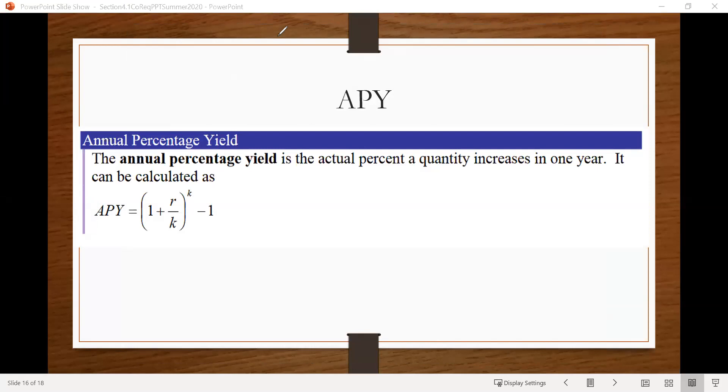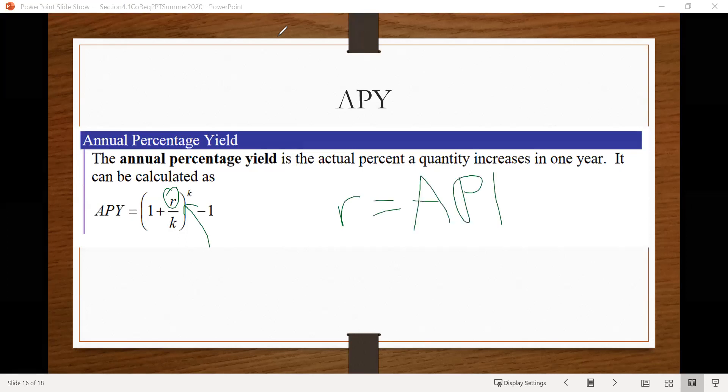So recall that in our compound interest formula, the value for R, which we also see here in this formula, that stands for our APR, which is what we call our annual percentage rate. So for example, in the problem with grandma's money, we were told that our APR was 1%, so annual percentage rate, and that word annual means yearly percentage rate, right?